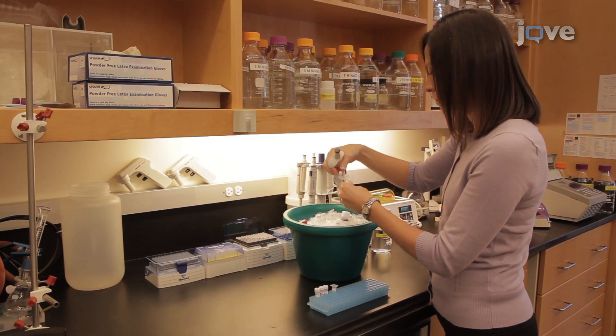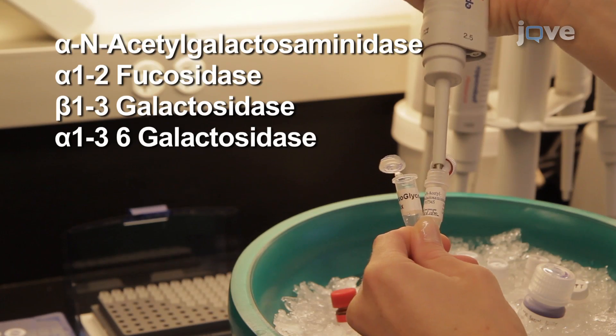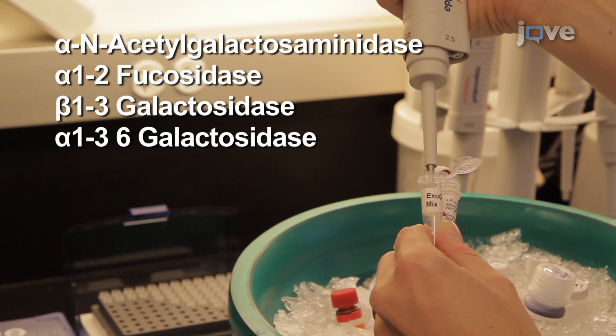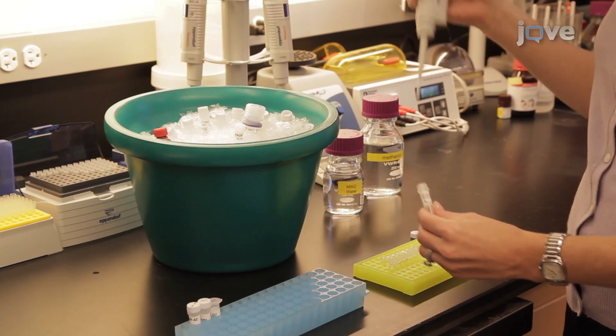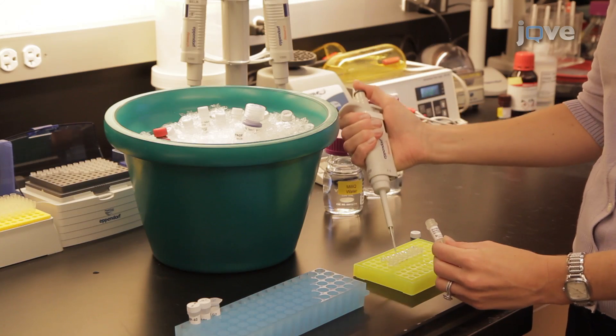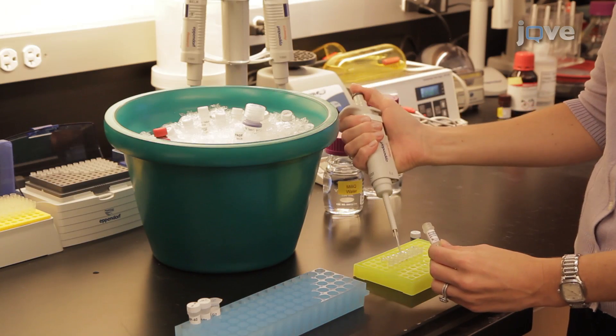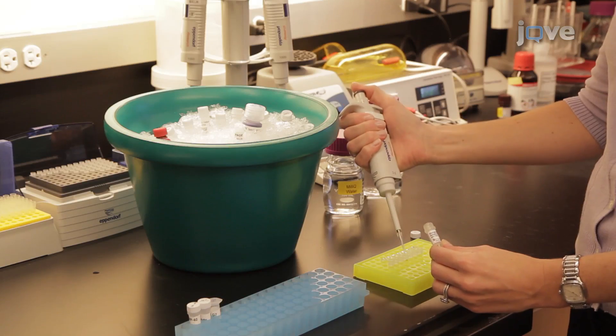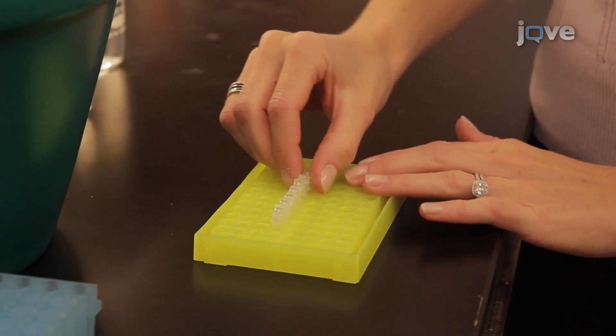Prepare the exoglycosidase mix by combining 2 microliters each of the 4 exoglycosidases. Next, add HCG beta and 10X glycoprotein denaturing buffer to 7 numbered PCR tubes as indicated in the written protocol. Cap the tubes and mix gently.